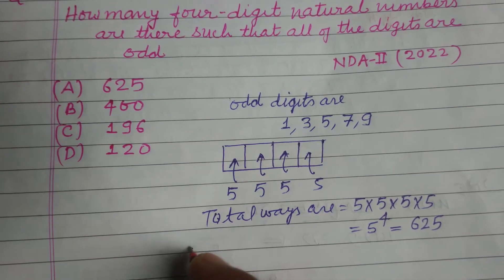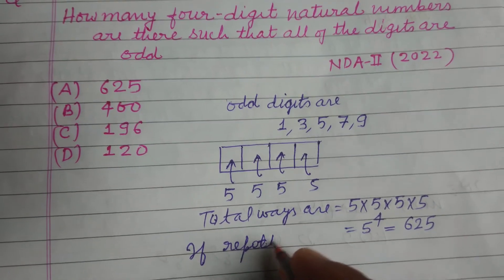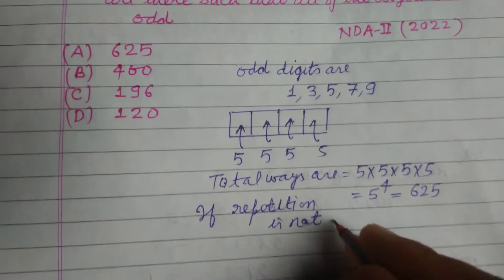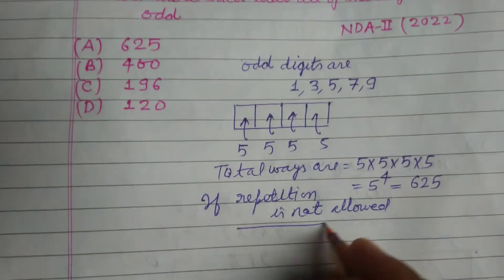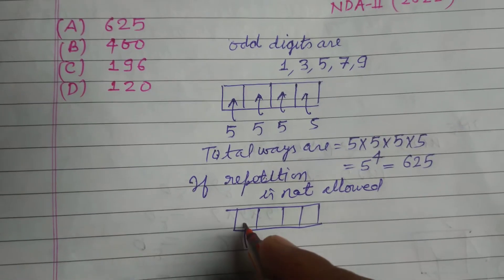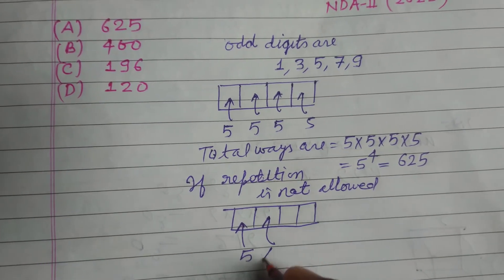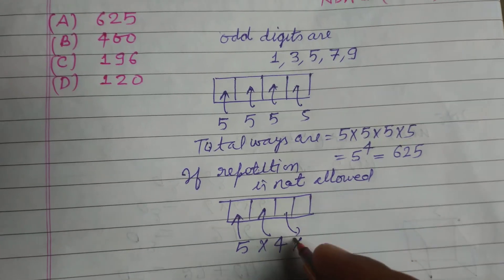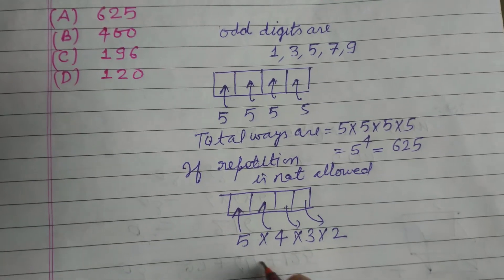What if repetition is not allowed? Then these four places can be filled: the thousand place by five ways, the hundred place by four ways, the ten place by three ways, and the one place by two ways.